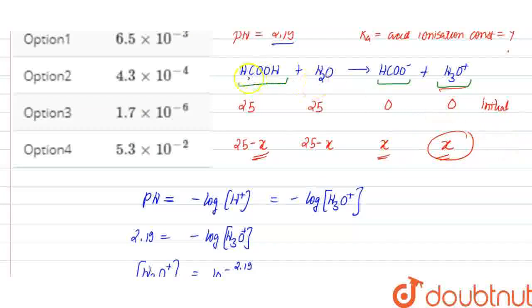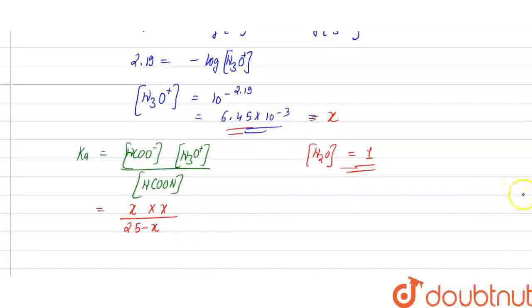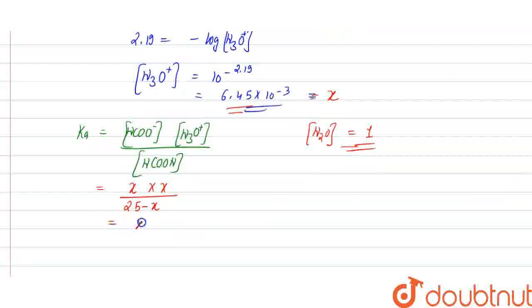If I talk about their concentration in terms of X, this is X times X, and the acid concentration is 25 minus X. So Ka equals X² over 25 minus X.